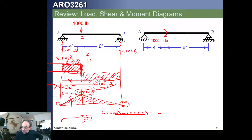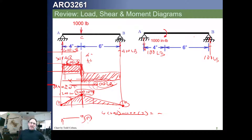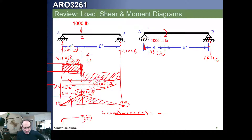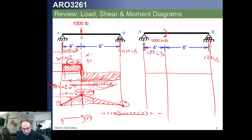Now, if we do the same thing for the other beam and sum our moments and forces, we find we need a reaction of 100 pounds here and a reaction of 100 pounds here. This is a couple: 100 times 10. We sum moments about point A to get the reaction at B, then sum vertical forces to get the reaction at A. If we then wanted to draw our shear and moment diagram, we put it right underneath the loading diagram — shear diagram here, and moment diagram down here.